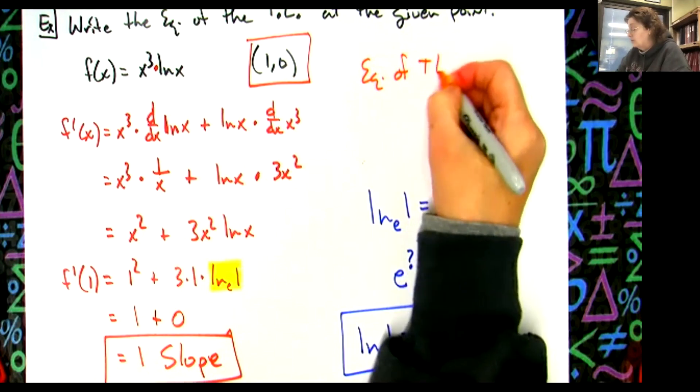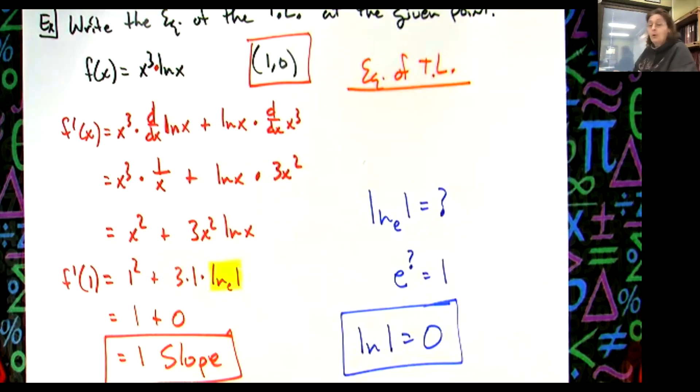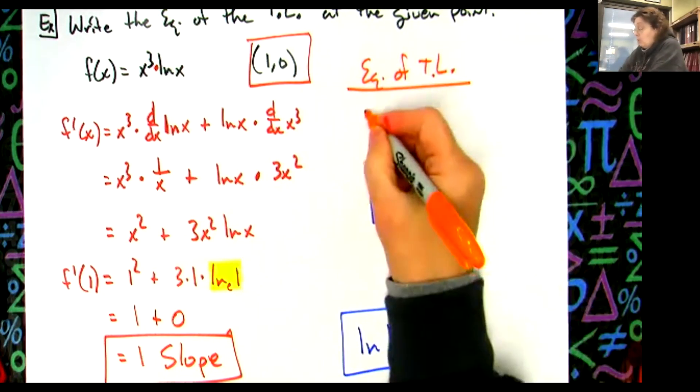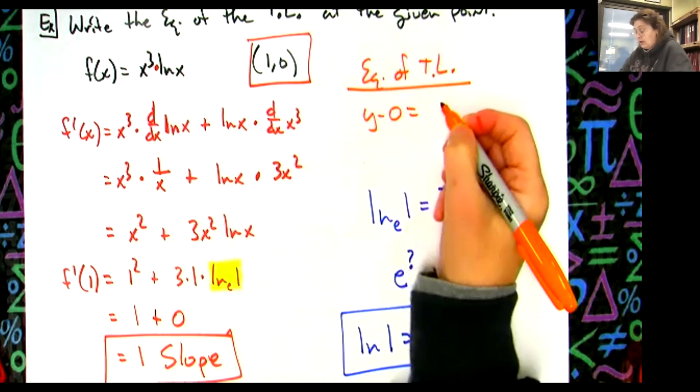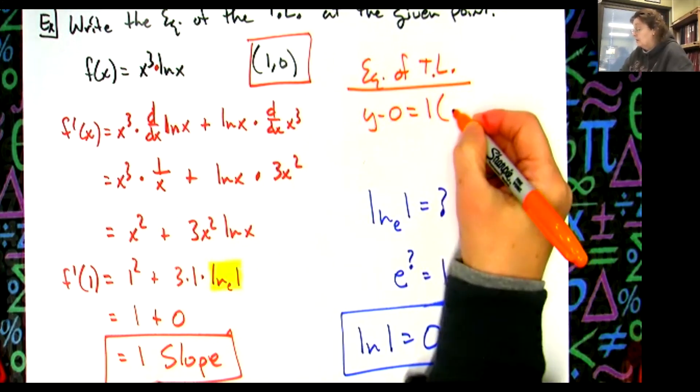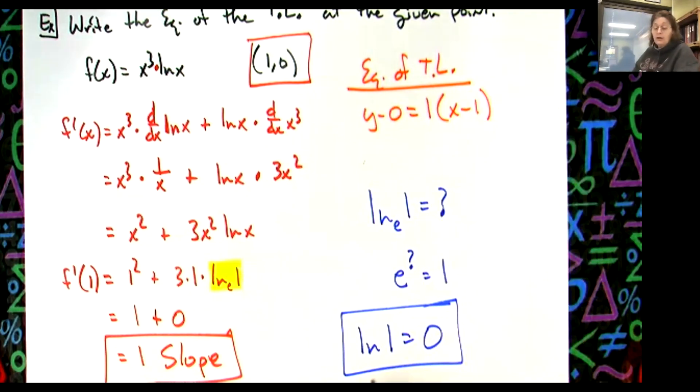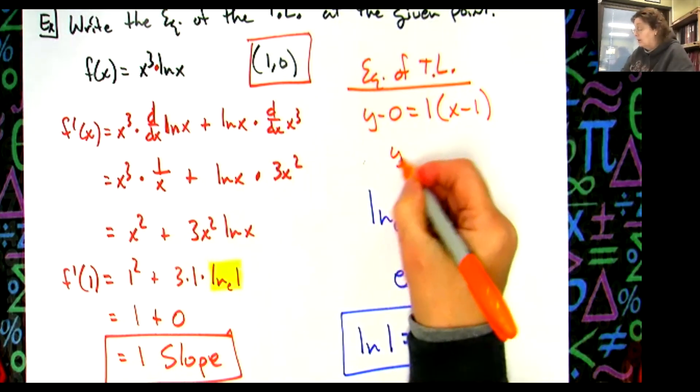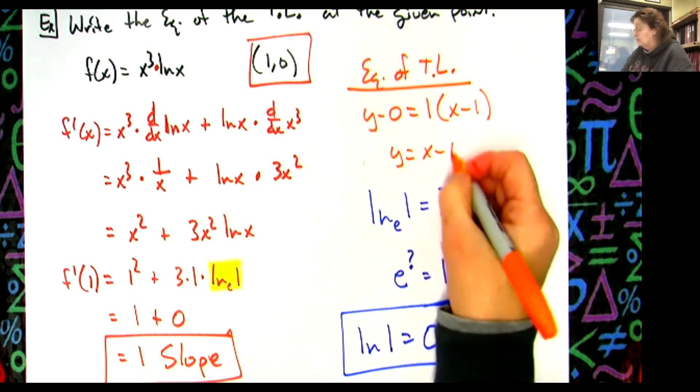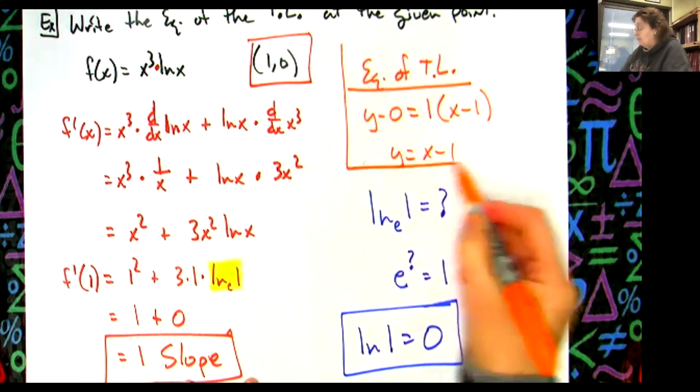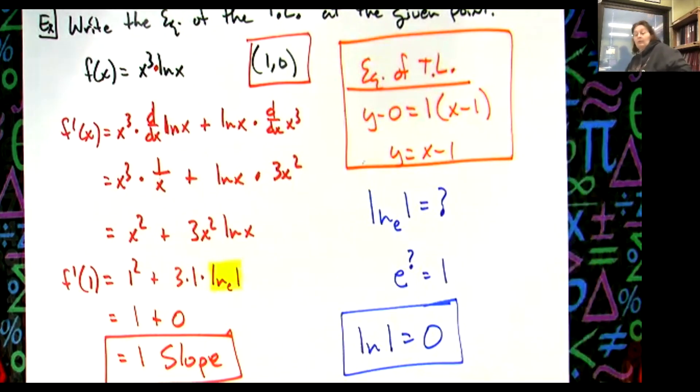Equation of tangent line, all right, point slope form, right? So y minus 0 equals my slope is 1 times x minus 1, and then now we can clean that up a little bit. Y equals x minus 1, right?